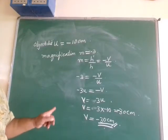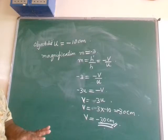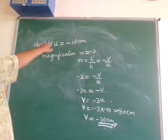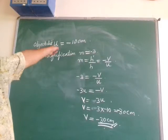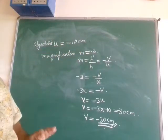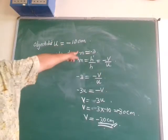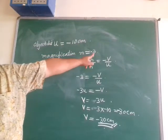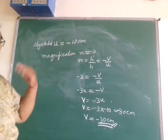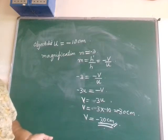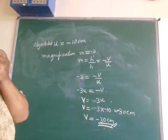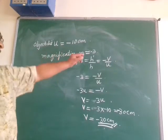To repeat: object distance u is minus 10 centimeters. Since the image is real, magnification m is taken as minus 3, because the image is 3 times magnified and real images have negative magnification.